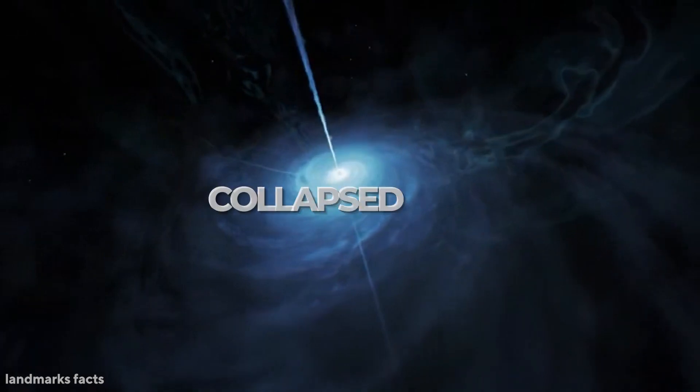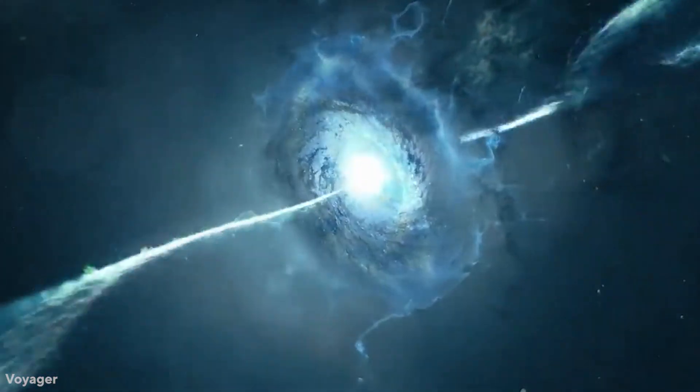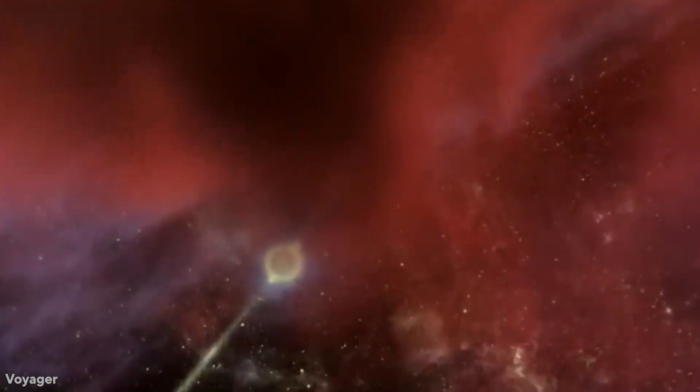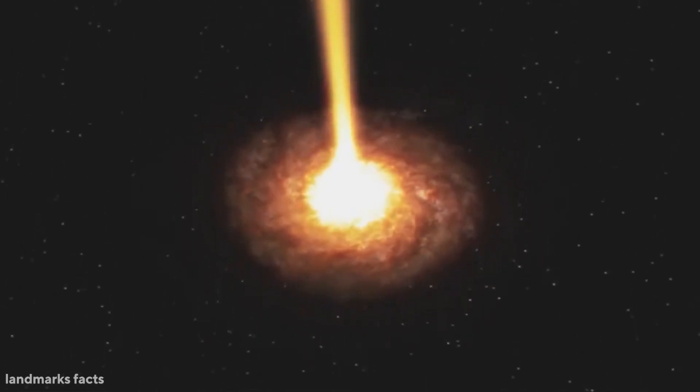A neutron star is formed from the remnants of a collapsed star. When big stars die, their cores collapse, melting the protons and electrons to form neutrons.